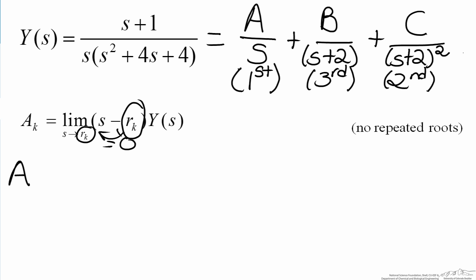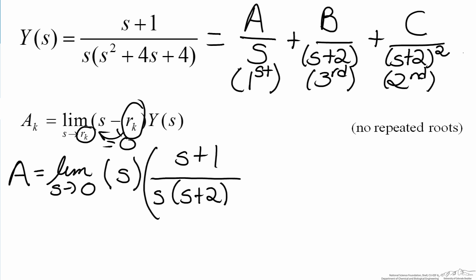So A will equal the limit as s approaches zero of s minus r sub k, which is zero here, that will just be s, multiplied by Y of s, which is s plus 1 over s times s plus 2 squared. What you'll notice is, and this will always happen when using the Heaviside method, is that the s minus r sub k term will always cancel out with a denominator with Y of s, which makes sense because the denominator of Y of s has all of the roots. So in this case the s in the numerator will cancel out with the s in the denominator.